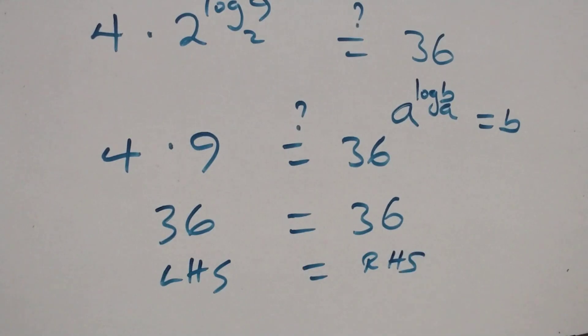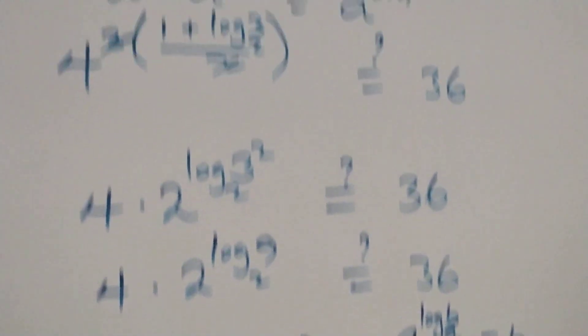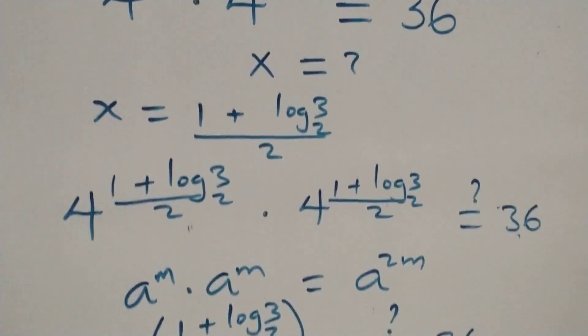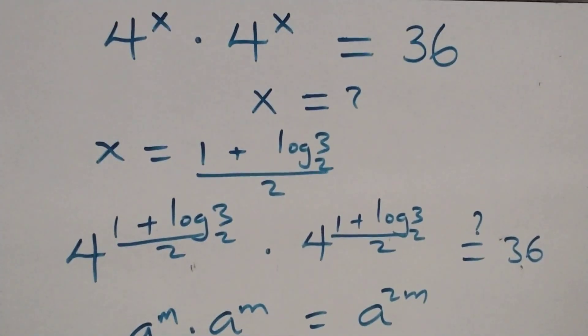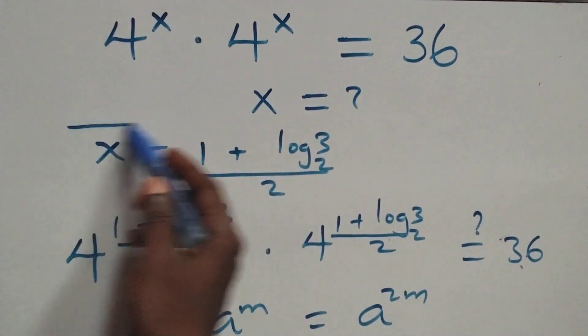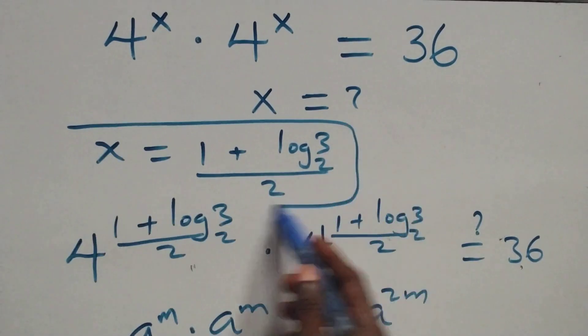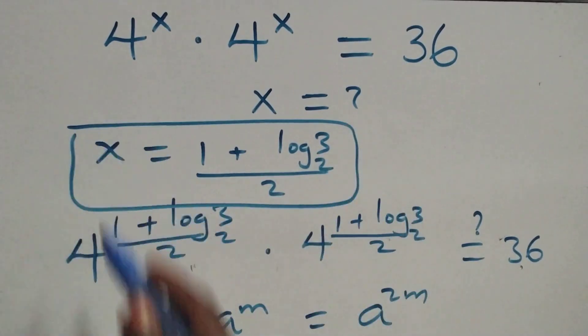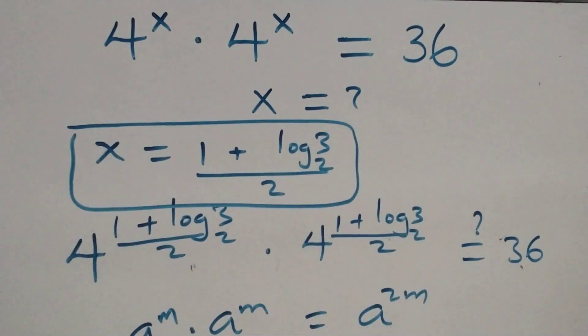Therefore, we conclude that x equals (1 plus log₂3) all over 2 satisfies the given problem. Thank you for watching — don't forget to subscribe for more videos and turn on the notification bell.